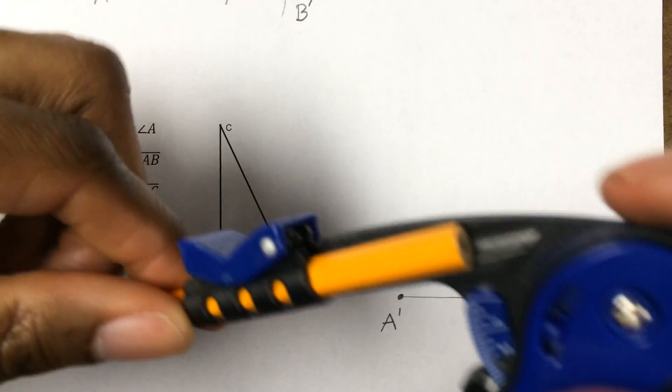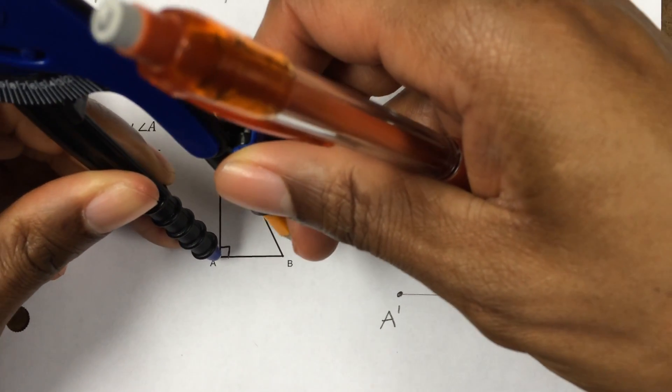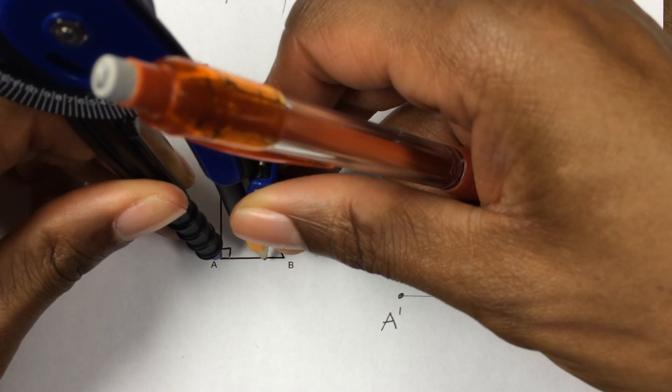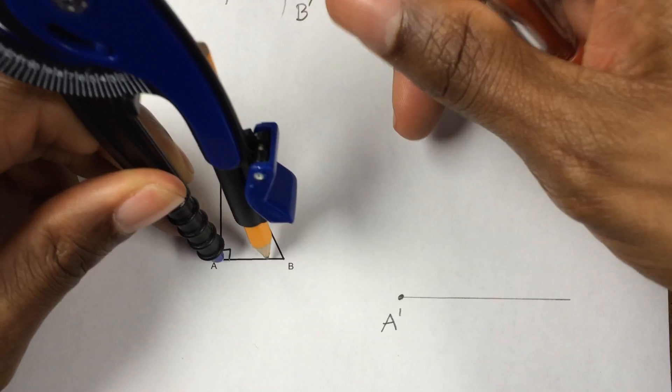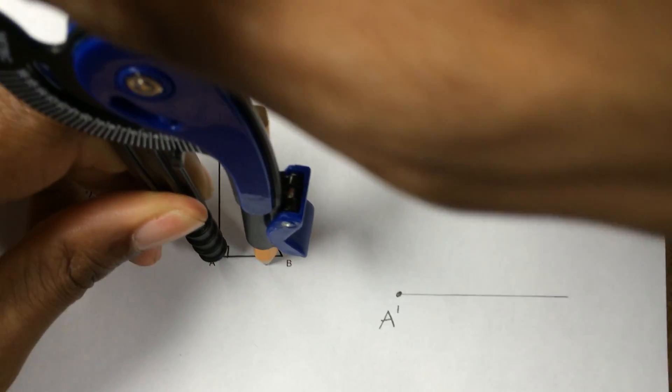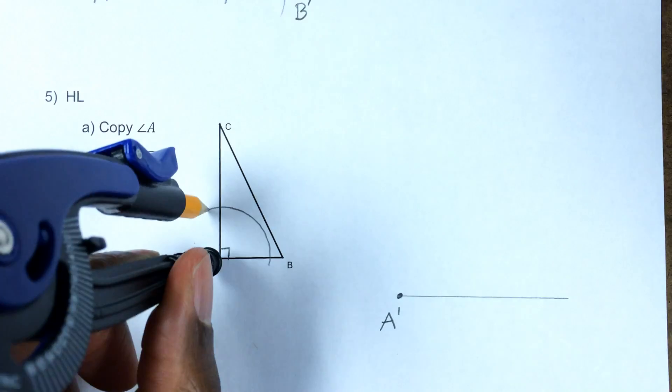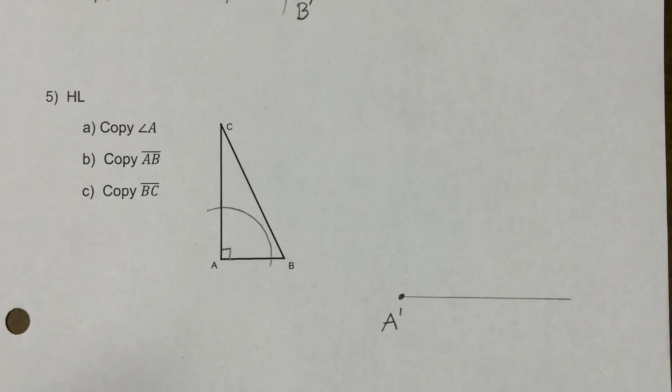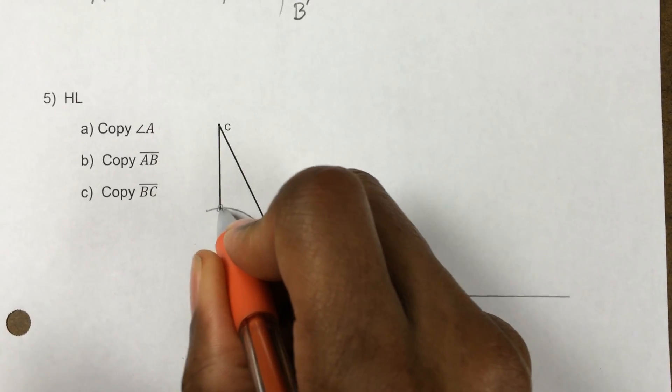To copy the angle, use your compass and draw yourself an arc that's going to intersect both sides of the angle. So I'm going to put my point right here and I'm just going to go ahead and draw myself an arc that's going to intersect both sides. That's going to intersect both sides of the angle, like here and here.